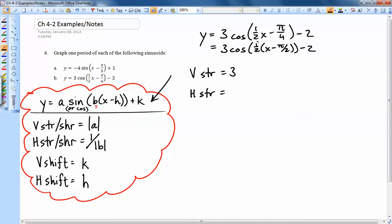is going to be 1 over this value. Remember, you've got to flip it, so it's actually 2, horizontal stretch of 2. The vertical shift is that negative 2 at the end, so it's 2 down. And the horizontal shift is going to be π/2 to the right.